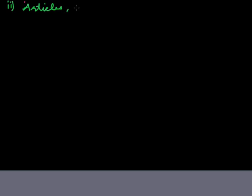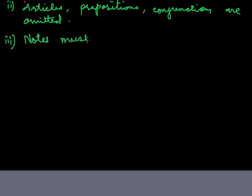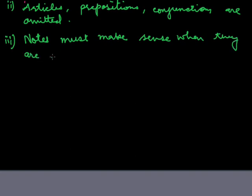Important note number 1: abbreviations and symbols are really used. Point number 2: articles, prepositions and conjunctions are omitted in notes. Point number 3: notes must make sense when they are read again.